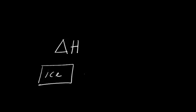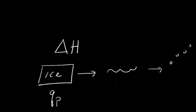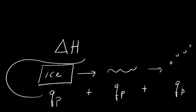Suppose you wanted to calculate the change in enthalpy for a multi-step physical change. Let's say you've got some ice and you want to figure out the change in enthalpy for a particular amount of ice melting to liquid and then boiling off as steam. You can do this because the change in enthalpy itself is a state function, so you can just determine the amount of heat it takes at each step and add it all up to get the total change in enthalpy for any physical change.